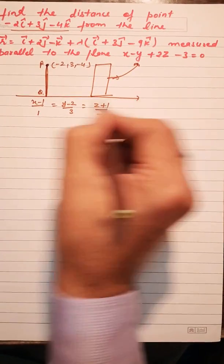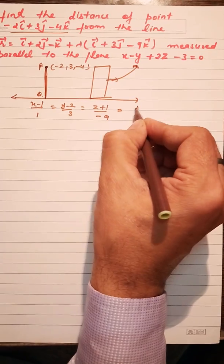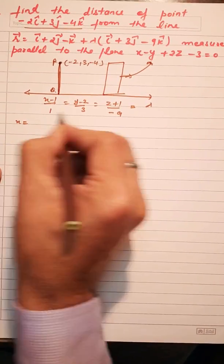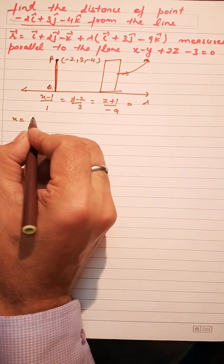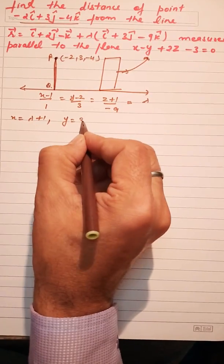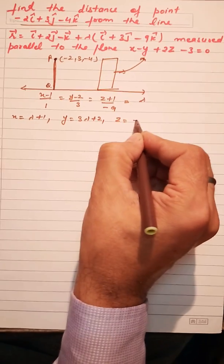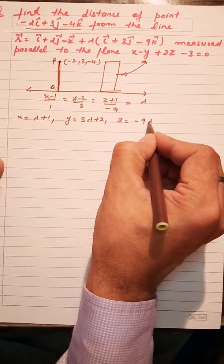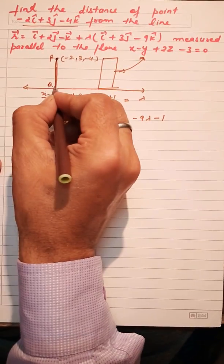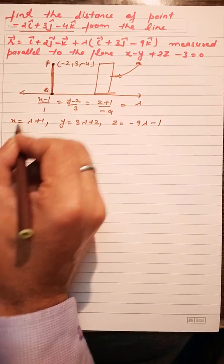Any point on the line is equal to lambda, so the coordinates of point Q on the line are: x = λ+1, y = 3λ+2, and z = -9λ-1. These are the coordinates of Q.